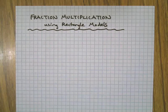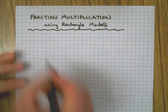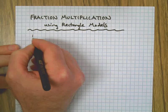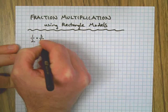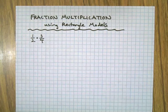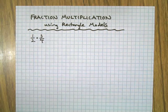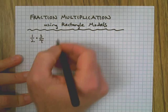For example, let's say we have a problem like this. Traditionally you would look at that and go, oh, one-half times three-fourths.